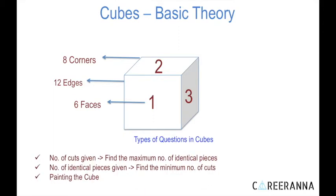Talking about the types of questions that come in cubes, there are basically three different types. Type one: you have been given the number of cuts and you have to find out the maximum number of identical pieces that will come out. Type two is the reverse — you have been given the number of identical pieces and you have to find out the minimum number of cuts required. Type three would be painting the cube. We will discuss type 1 and type 2 in this video and type 3 will be covered in the subsequent video.